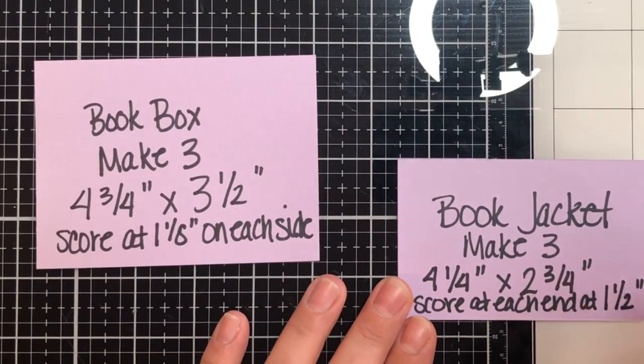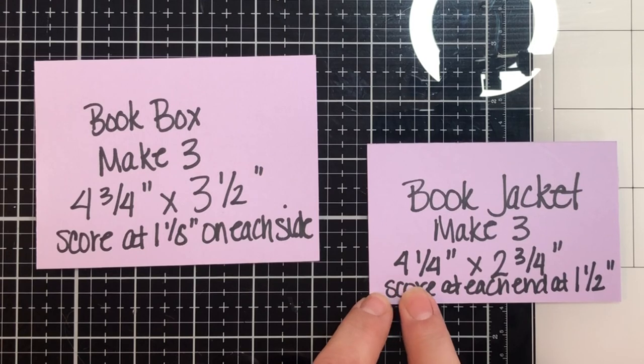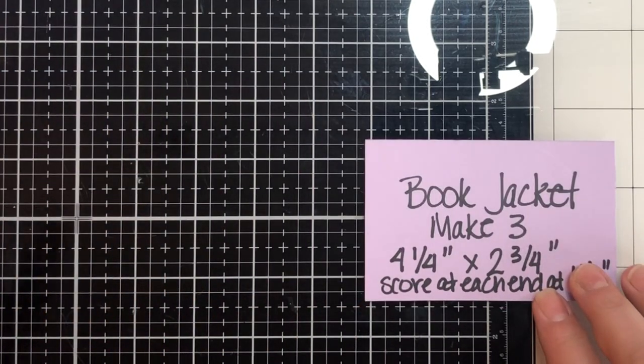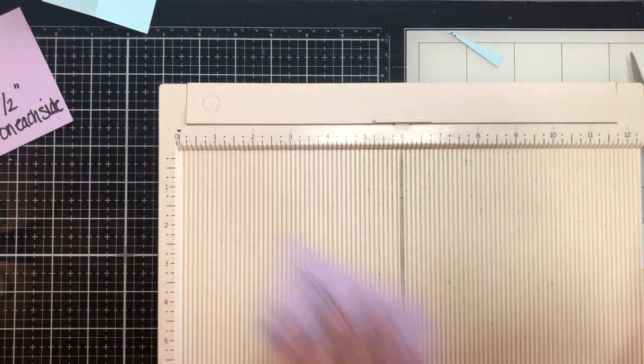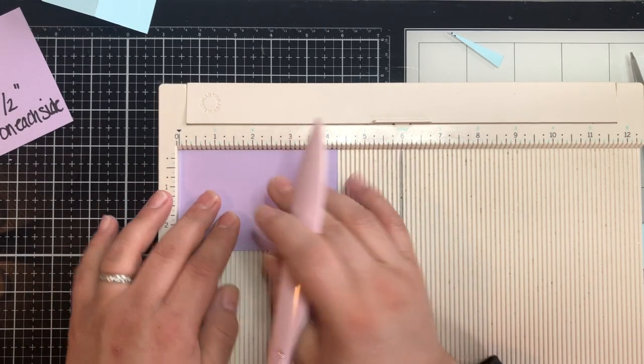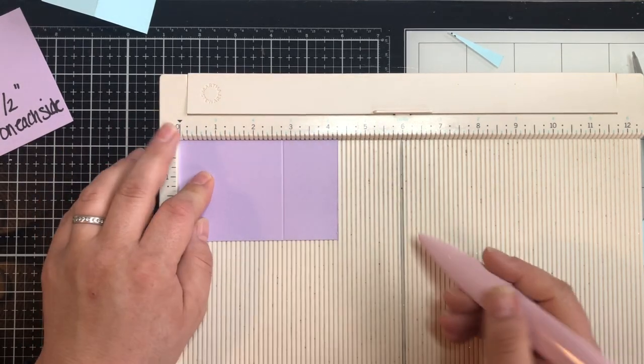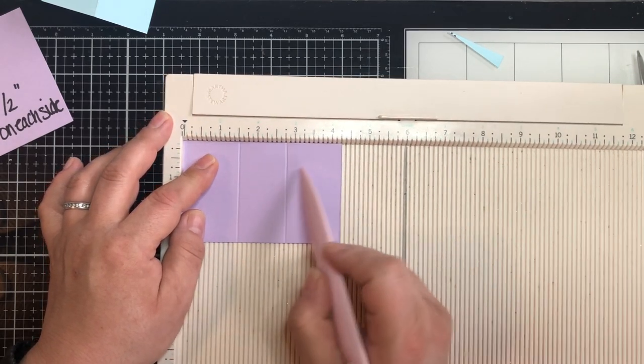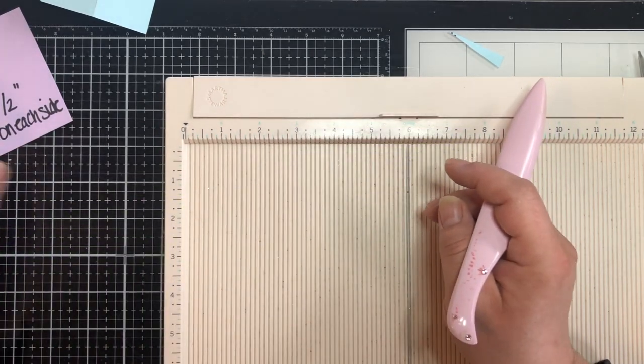The book jacket, you'll need to make three of these and you're going to need a piece of 110 pound card stock that measures four and a quarter by two and three quarters. And you're going to score it each end at one and a half. And that's on the long side. Let's grab our scoring board again. And I'm just going to flip this over and I'm going to score it one and a half. And then I'm going to do a half turn and again at one and a half. And that's going to leave you a one and a quarter inch spine on this. You're going to again make three of these. Set them aside.